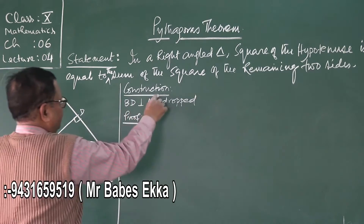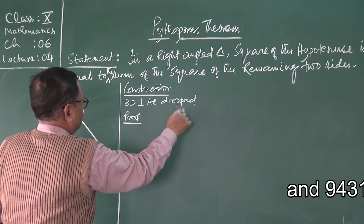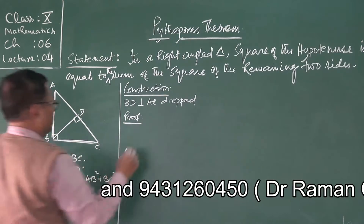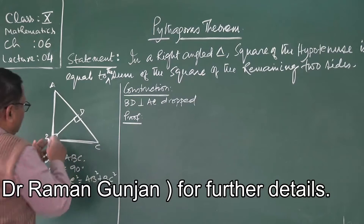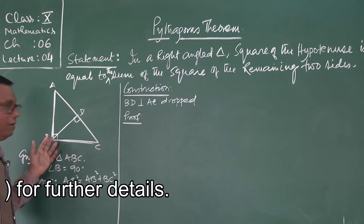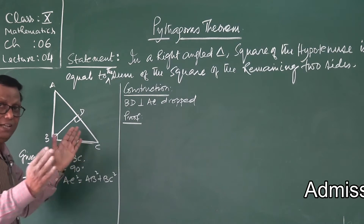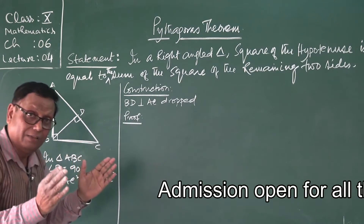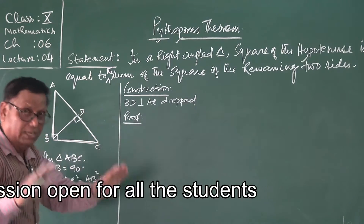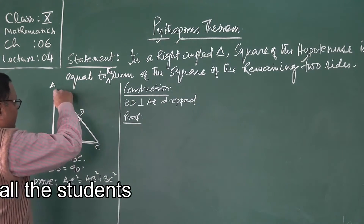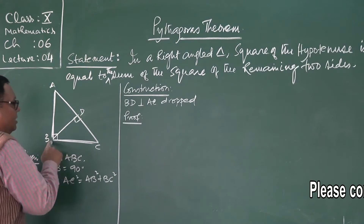BD perpendicular to AC is dropped. By dropping this perpendicular, we find that the original right angle triangle ABC is divided into three triangles: one original triangle ABC, the second right angle triangle ADB, and the third right angle triangle BDC.